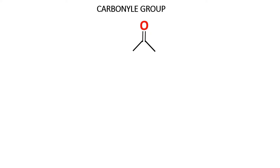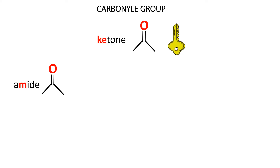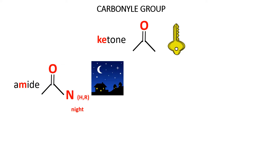If you look at this carbon-oxygen double bond, its shape resembles that of a key — key, ketone. So the name of this structure is ketone. The next structure is called amide. I bolded the letter M because the next letter that comes after M is N. So a carbon-oxygen double bond attached to a nitrogen is called amide. You see here there's a picture of a house at night — N for night — and this will come into play when we tell our story.